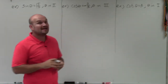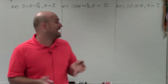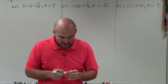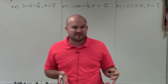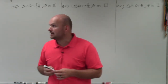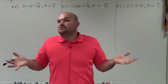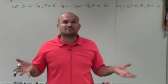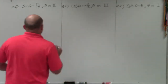Cosine of theta equals negative 2 over 3, with the constraint that theta must be in the third quadrant. In my first video, when I evaluated the double angles, we were given a right triangle. Now we're not given a right triangle, so we have to go ahead and draw it.